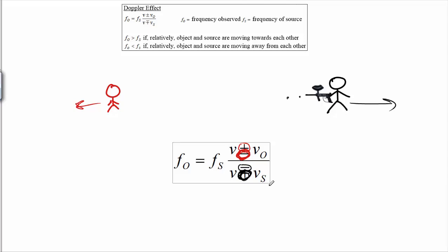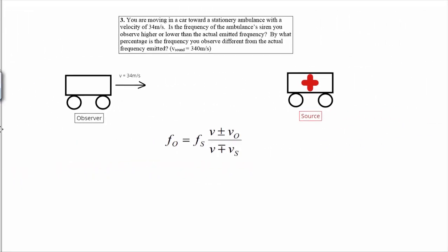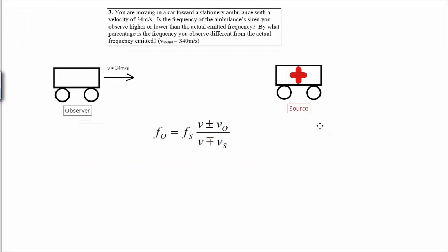Light and sound both have a frequency, and in principle it works exactly the same way. Let's take a look at the example on your handout. Number three says you're moving in a car toward a stationary ambulance with a velocity of 34 meters per second. Is the frequency of the ambulance siren you observe higher or lower than the actual emitted frequency? In this case it's the observer moving towards the source — the source is stationary — and whether the observer is moving towards the source, the source toward the observer, or both, the frequency observed is going to be higher than the actual frequency emitted by the source.